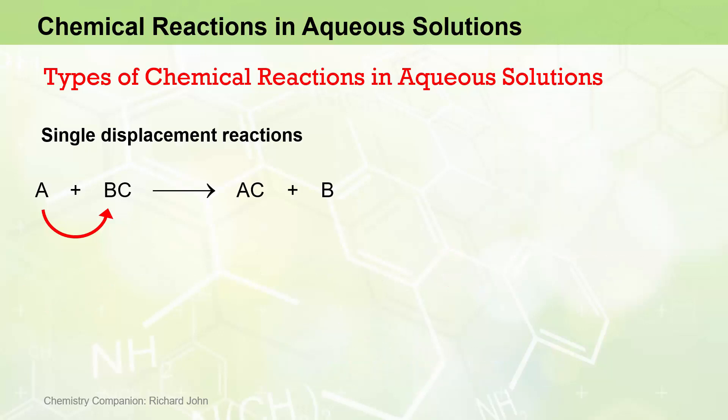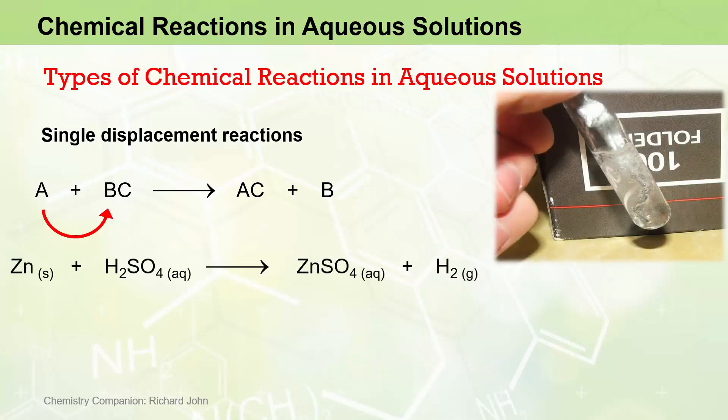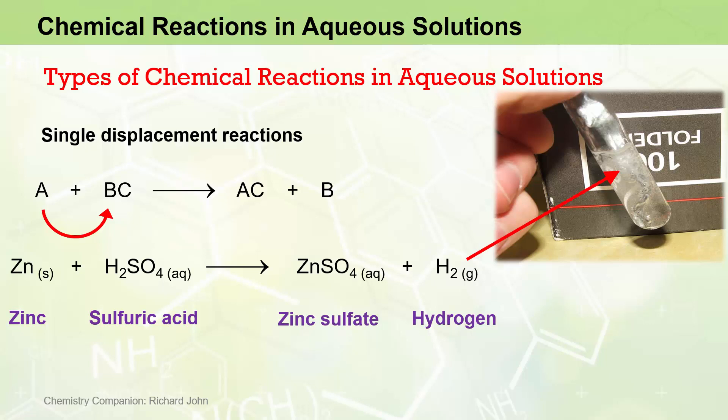Another example of a single-displacement reaction involves the reaction between an acid and a reactive metal to produce hydrogen gas bubbles. In this case, we have zinc metal reacting with sulphuric acid to produce a zinc sulphate solution and elemental hydrogen which is released as a gas in solution.